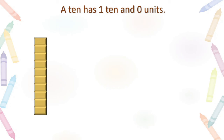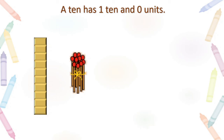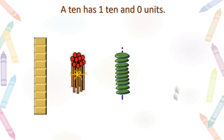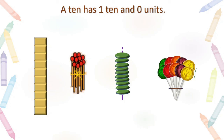A ten has 1 ten and 0 units. You will see some pictures here: 10 blocks one above the other — that is nothing but 1 ten. Here, 10 matchsticks tied together to make 1 ten. Here, 10 discs kept one above the other to make 1 ten. These are all 1 ten. And these 10 lollipops tied together also make 1 ten. When we get a bundle of 10 units, it becomes 1 ten.